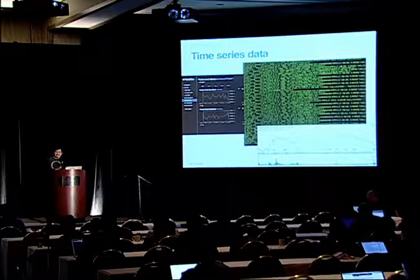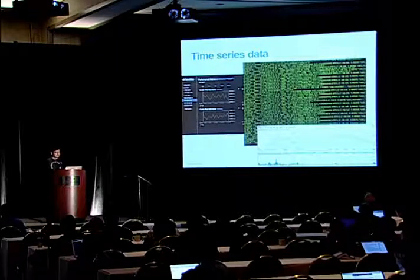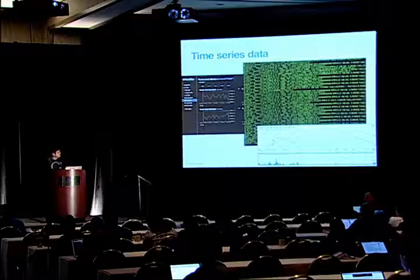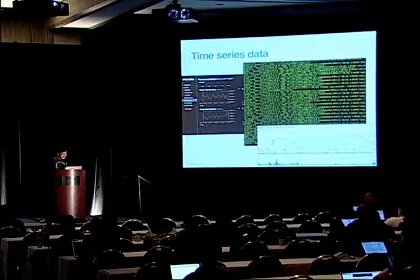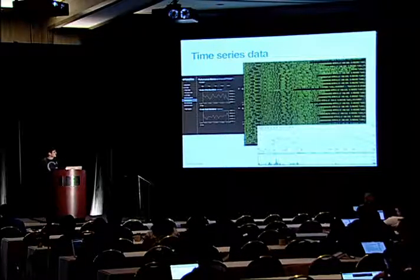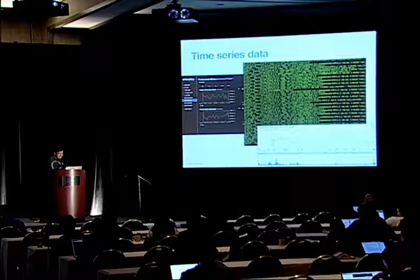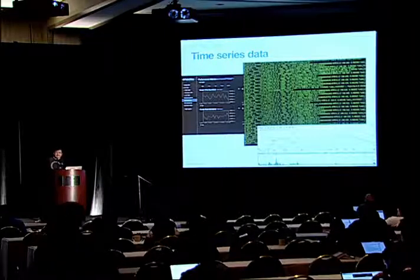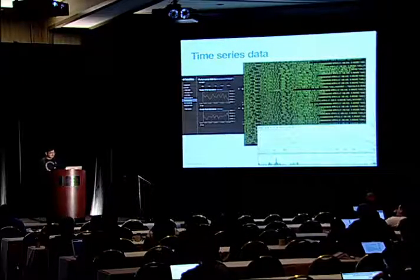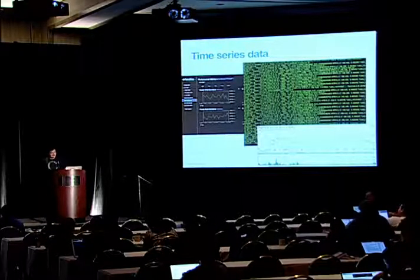Time-series data is one of the most popular use cases in Cassandra, and it is a very good fit because of Cassandra's nature of data modeling and the performance it gives. Here I have a black background in green — that is a web server log to track user activities on the site, which is one example of time-series data. On the right side we have a monitoring tool to measure performance of applications or hardware. Or in general, financial data like stock prices is also considered time-series data.